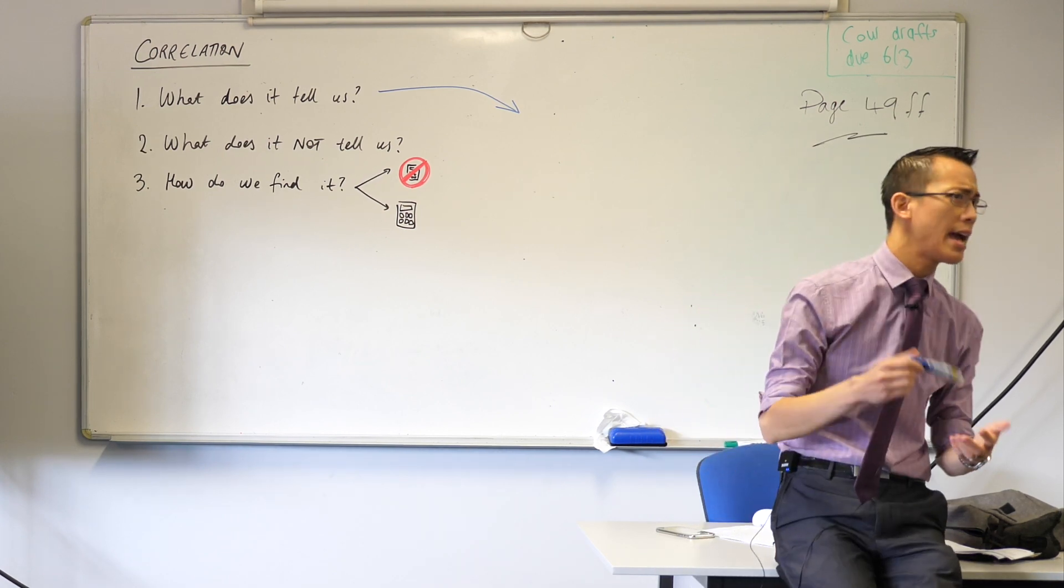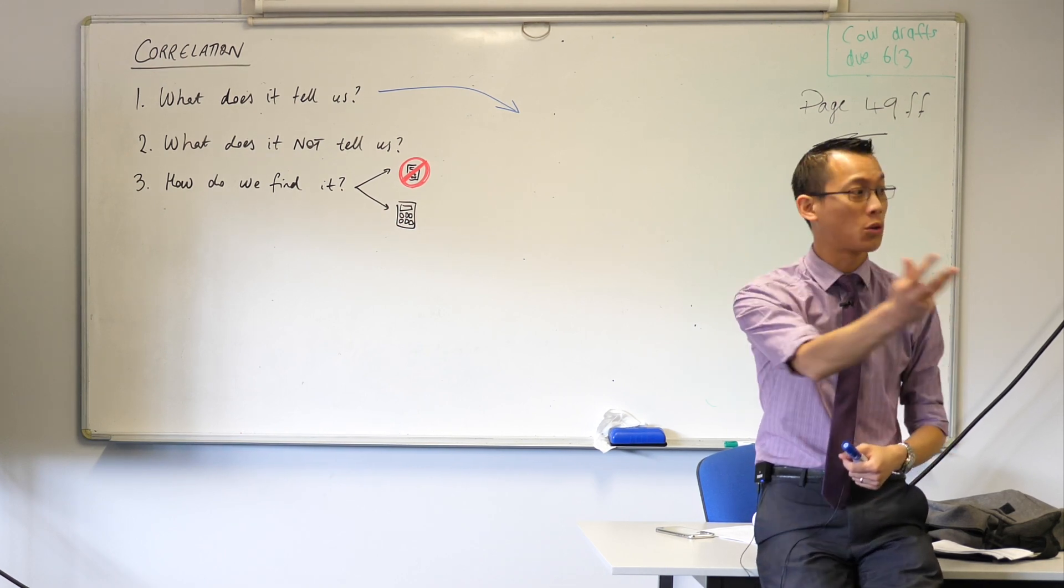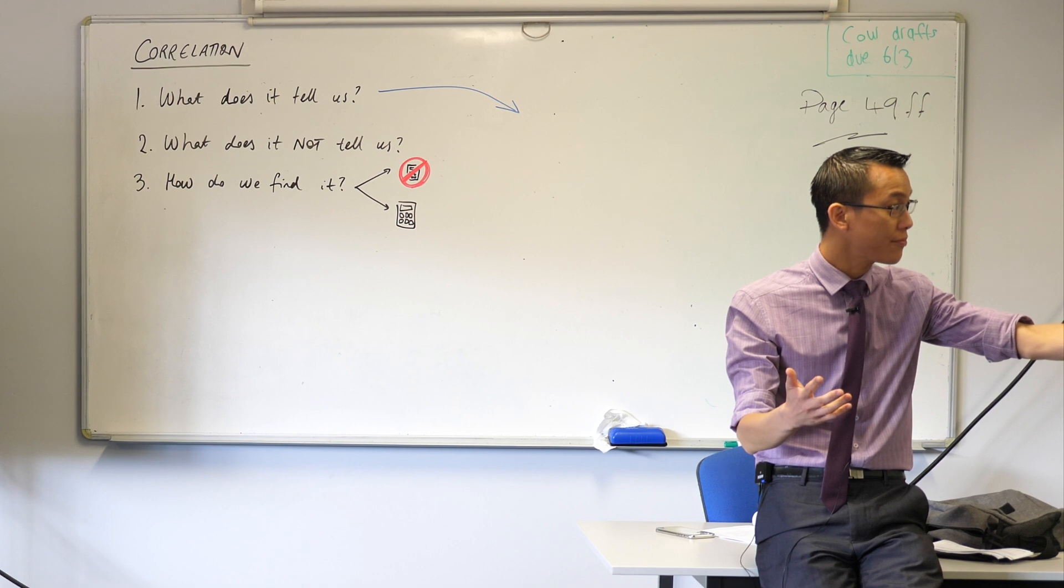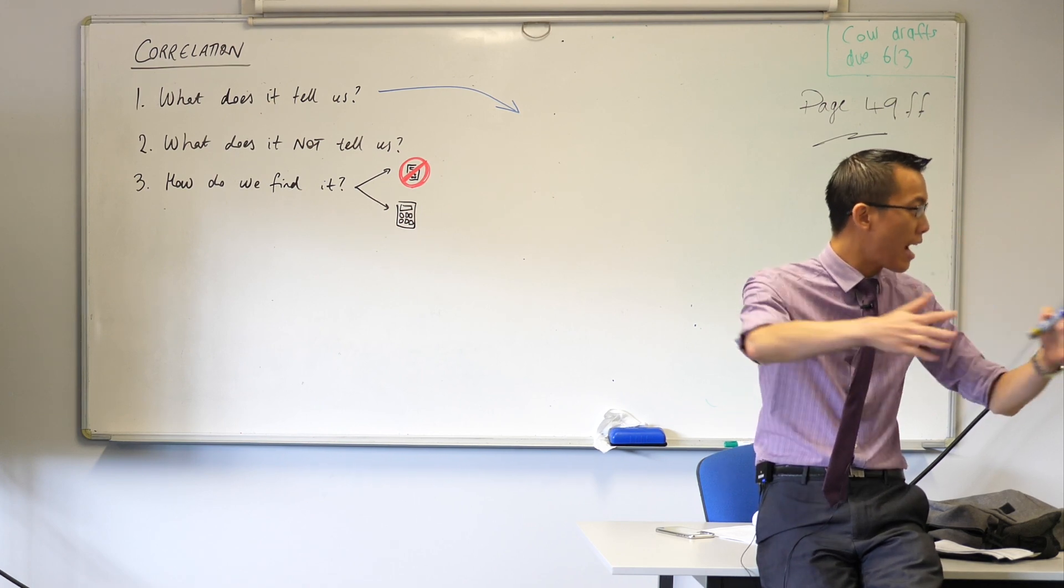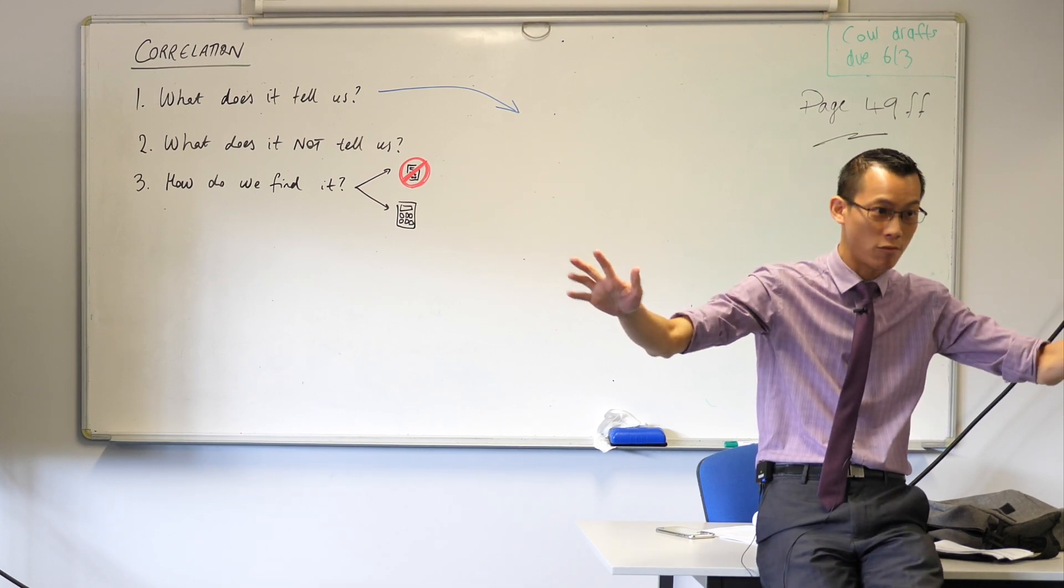What about things like standard deviation, variance, range, interquartile? What did these tell you? Yeah, how far are things spread out, right? So we call them measures of central tendency and then measures of spread.